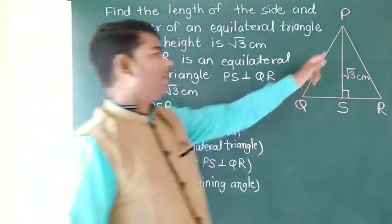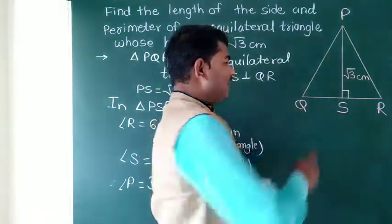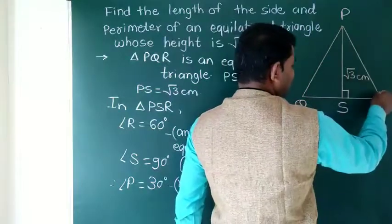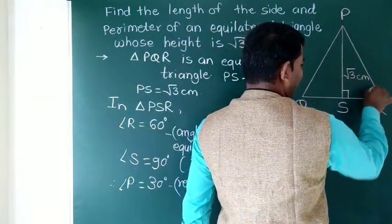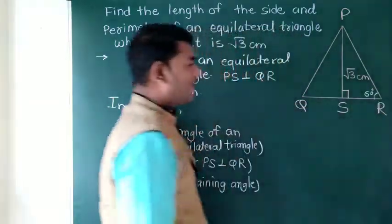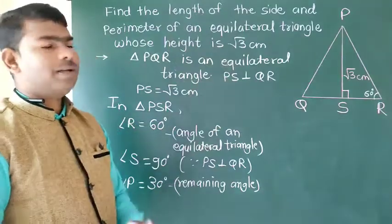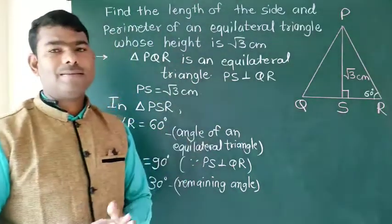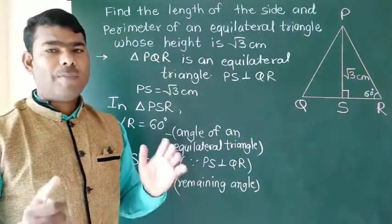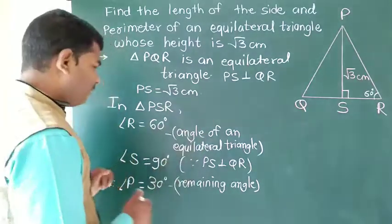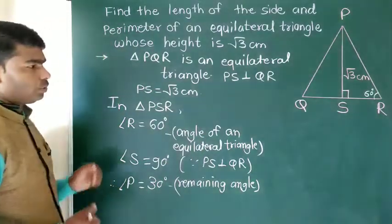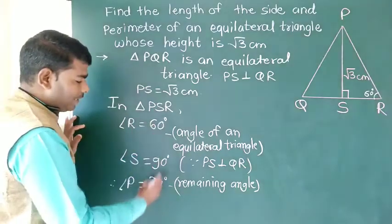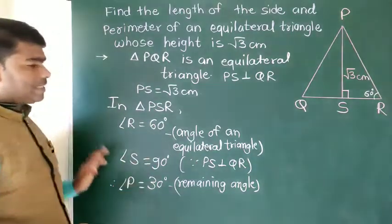The angle at P is 60 degrees and the angle at R is 60 degrees. The hypotenuse is PR. PR is a side of the equilateral triangle. So in this 30-60-90 triangle, the hypotenuse is PR.